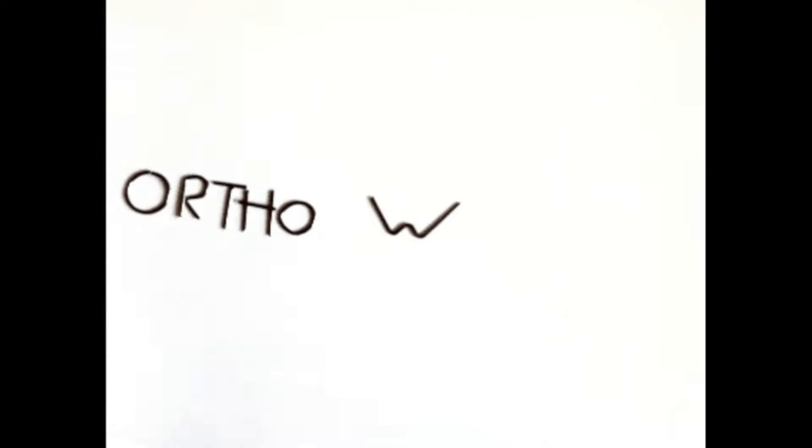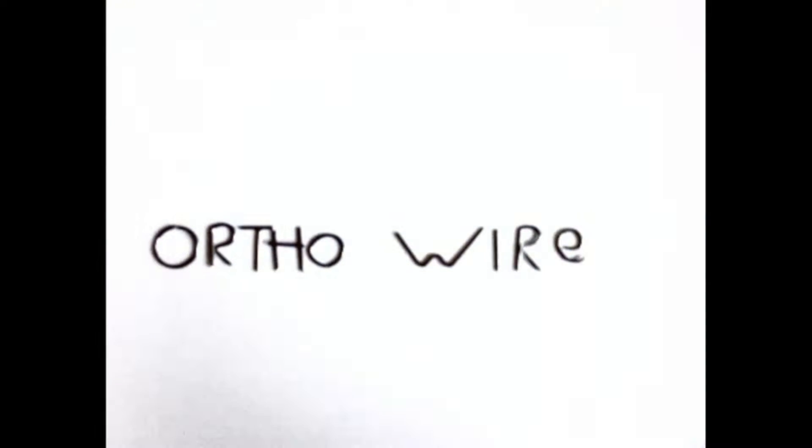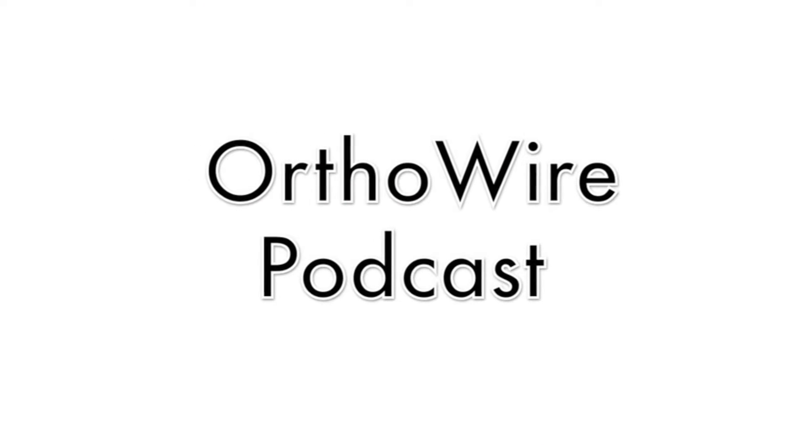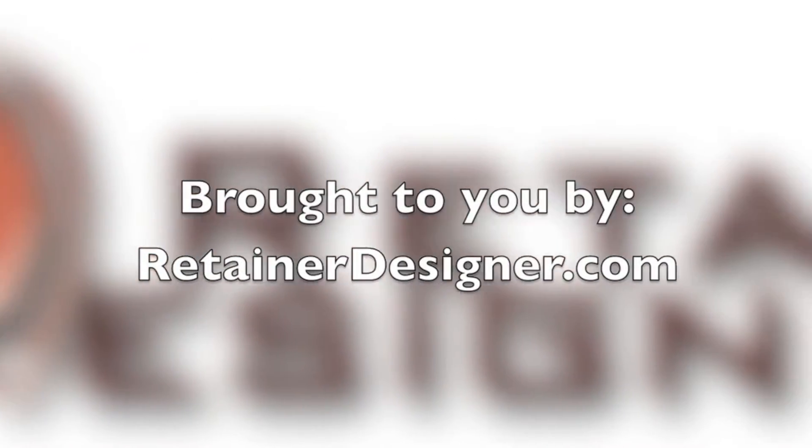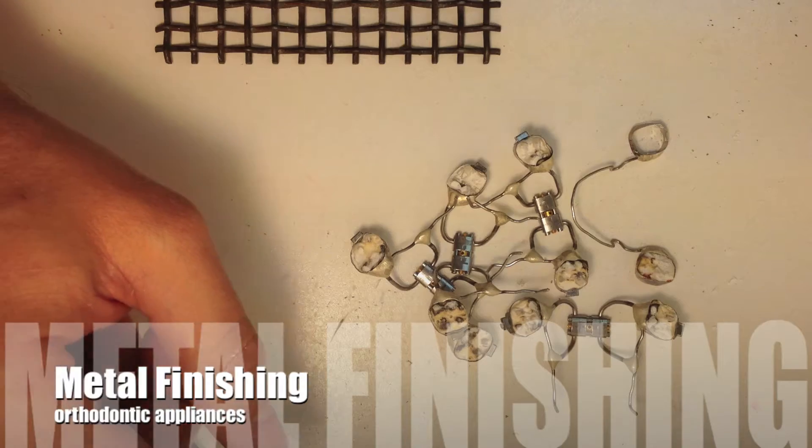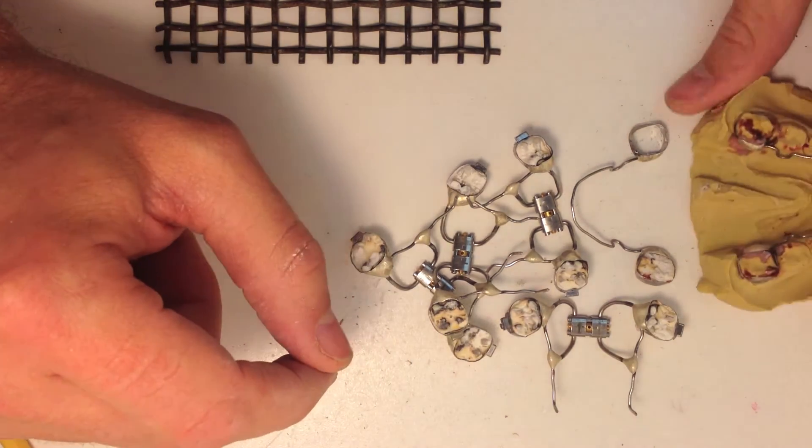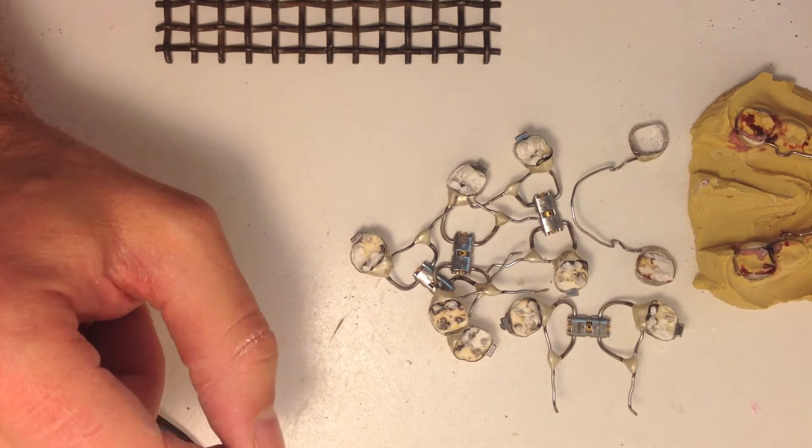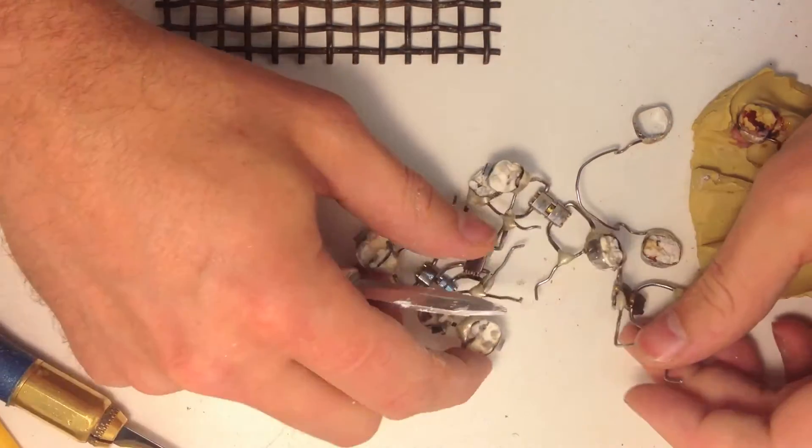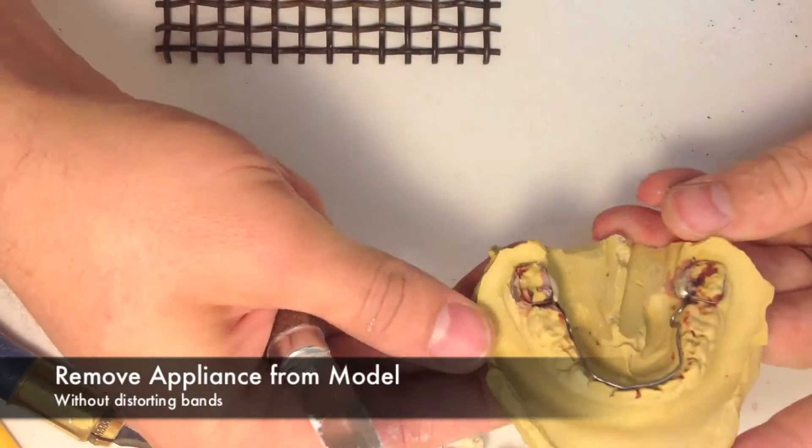Let's get started. There's a question on YouTube on how to finish some of these metal appliances, so I'm going to do a few of these here, just kind of show you what I do. First off, this is how to take them off the model. This is how they come to the acrylic guy who also does the metal work.